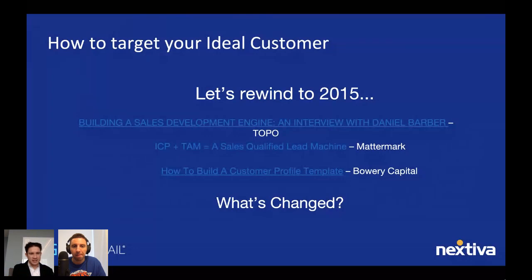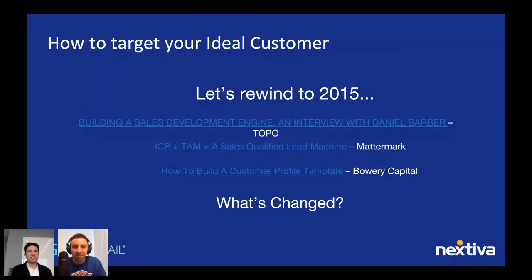So back then it was very easy to just mine company data, mine personal data, and compile it all together. Salespeople could go nuts — scrape data, abuse lists, share lists, all of that. But now we've entered this age of privacy. It doesn't mean business has to shut down; it just means you have to be more transparent with how you're operating, how you're emailing people, how you're collecting their consent, and how you're providing transparency and control to your customer.